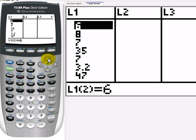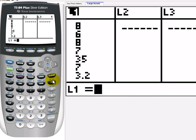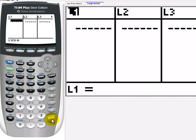Let's say I want to just get rid of the whole list. I just highlight the list header here, L1, and hit clear and enter. And the whole list is gone. Be careful when you do that because there's no way to get it back. There's no undo button for our calculator.